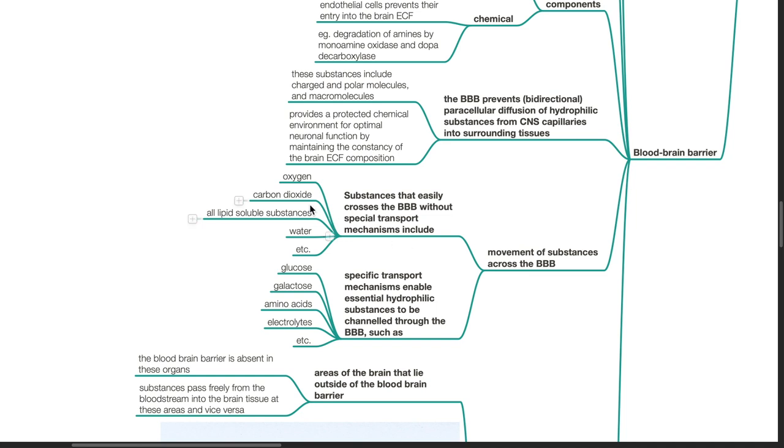Movement of substances across the blood-brain barrier. Substances that can easily cross the blood-brain barrier without special transport mechanisms includes oxygen, carbon dioxide, all lipid-soluble substances including anesthetic agents such as propofol and etomidate, water.